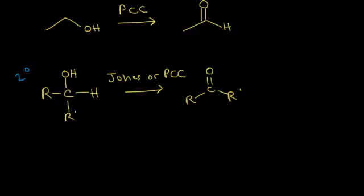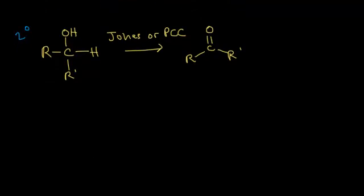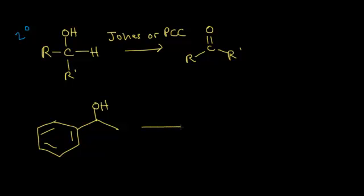Let's start with a secondary alcohol. I'm going to draw a benzene ring and then attach a secondary alcohol to that benzene ring. If I were to add either Jones or PCC, I look at my secondary alcohol and identify my alpha carbon attached to the OH. I can see there is one hydrogen attached to that alpha carbon. When I draw the product, I'm going to convert that secondary alcohol into a ketone.